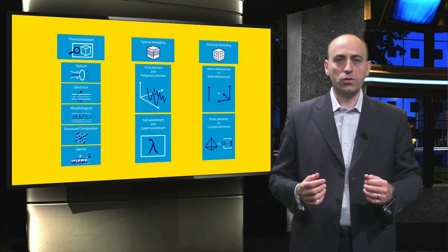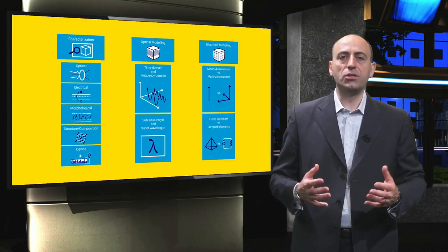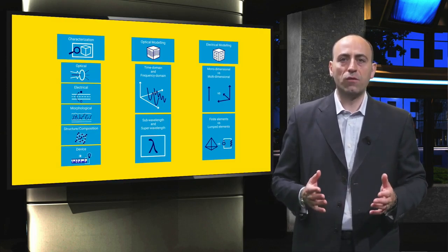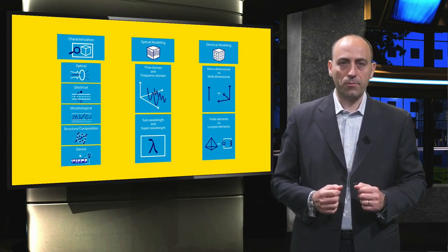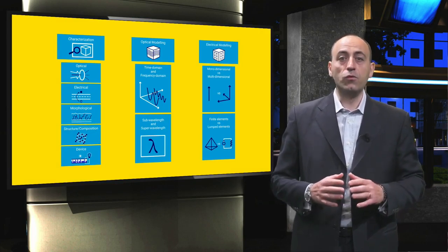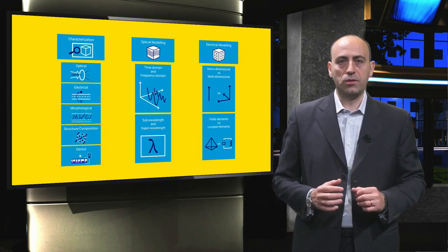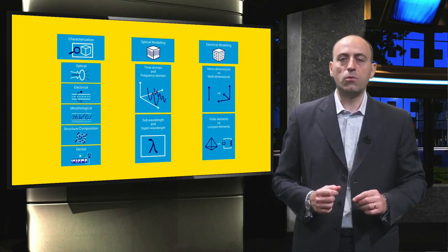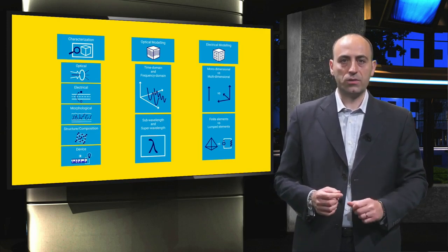For the purpose of this course, we will use the term characterization to indicate a set of processes and measurements used to determine the properties of PV materials and devices. These characteristics are fundamental inputs for all types of simulations. For this reason, they must be carefully and precisely worked out to avoid wrong simulation results.